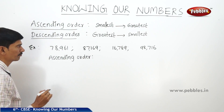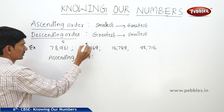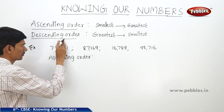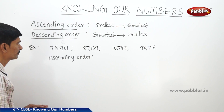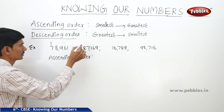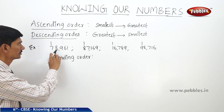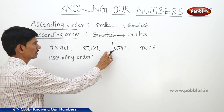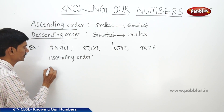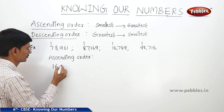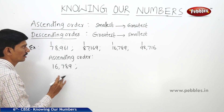Now all the given numbers have the same number of digits — 5 digits each. Now let us observe the highest place value. The ten-thousands digits are 7, 8, 1, and 9. If you observe the highest place values, the smallest one is 1, so we write 16,789 as the first (smallest) number.